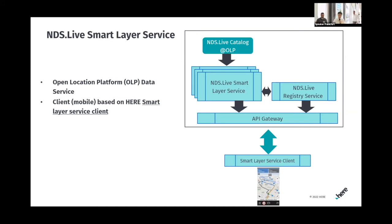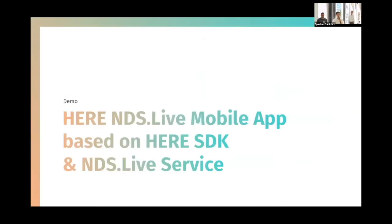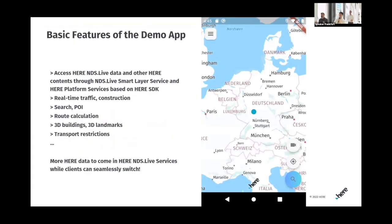About six weeks ago, we had the idea: what can we present in this demo? We decided to show all the HERE contents together with NDS live content. So we started brainstorming and ended up showing this app. It's basically a typical navigation app — what you would expect out of any map application. It shows real traffic, constructions, search, POI, route calculations, 3D buildings, and 3D landmarks. Essentially whatever contents you can think of from HERE is here.